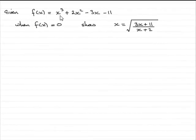Now in this question, we're given that f(x) equals x cubed plus 2x squared minus 3x minus 11. And we're told that when f(x) equals 0, we've got to show that x equals the square root of 3x plus 11 over x plus 2.